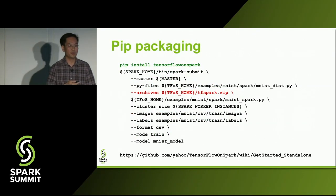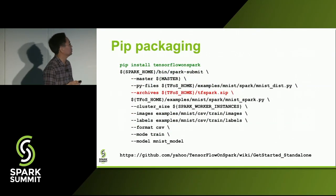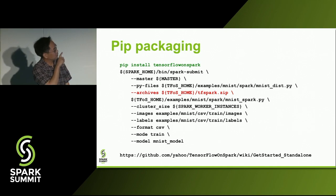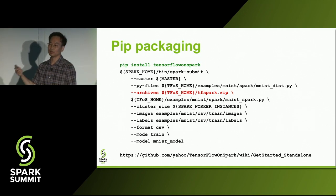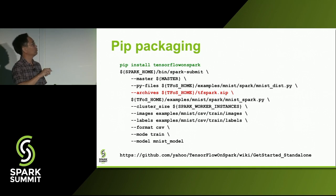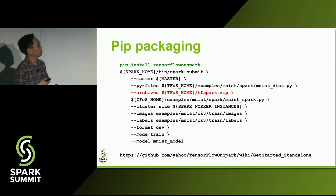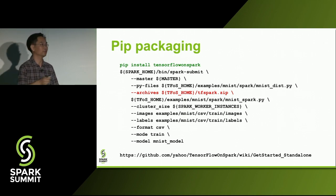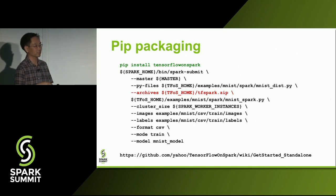For PIP packaging: before, we asked users to check out our repo, build a zip file, and ship it to all executors via the --archives flag. Now, for something like Spark standalone mode where you control your Python distribution across all nodes, you can just pip install TensorFlow on Spark and those cluster launch APIs will be available to you.